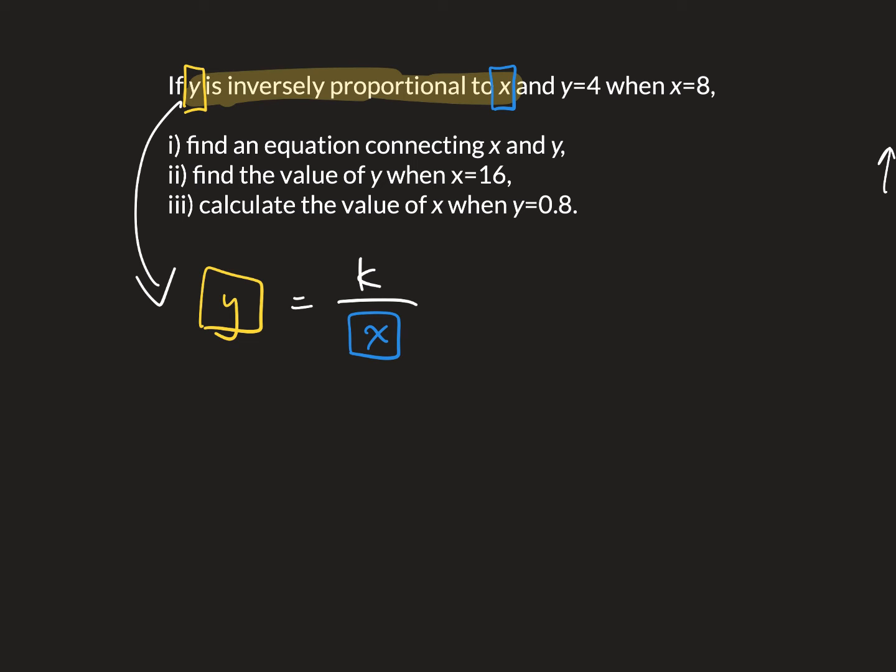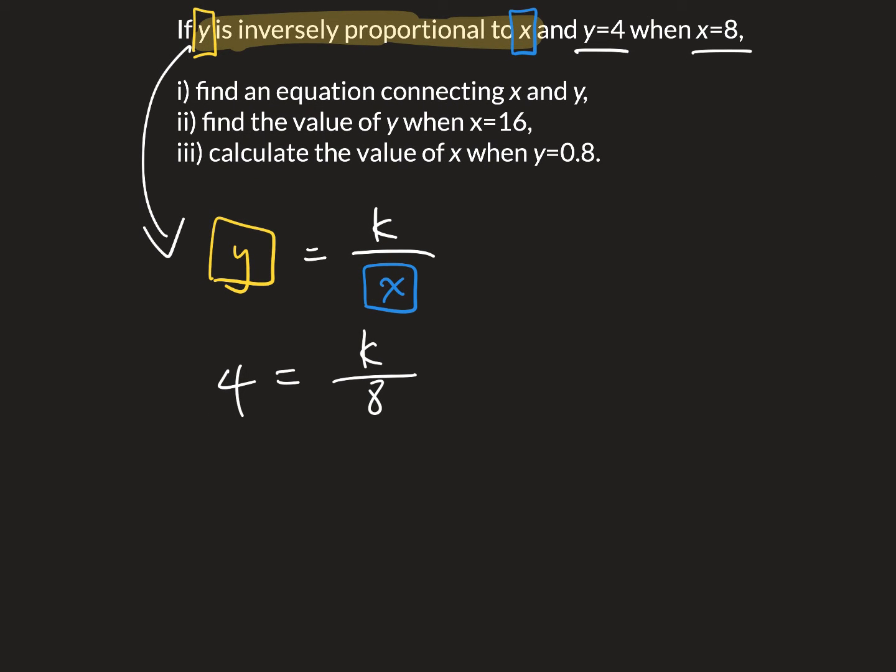And the rest is pretty similar to the direct proportion question. And so it tells us now y equals to 4 when x equals to 8. So let's just sub that in. So y equals to 4 when x equals to 8. And we can solve for k. This is k divided by 8.